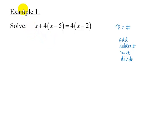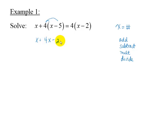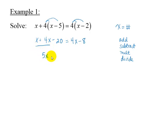In Example 1 we have the equation x plus 4 times x minus 5 is equal to 4 times x minus 2. Our first goal is to simplify each side of the equation as much as possible. First we apply the distributive property to each side to get x plus 4x minus 20 is equal to 4x minus 8. Now combine like terms on the left side to get 5x minus 20 is equal to 4x minus 8.